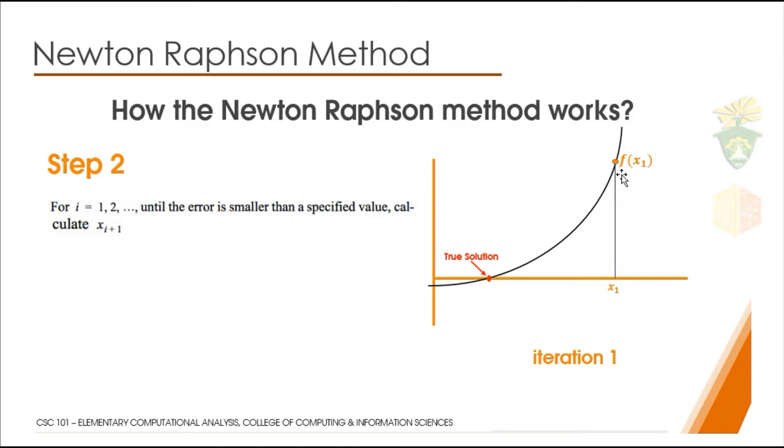The second step is to find f(x₁). In the function, you find where x₁ lands. In this example, f(x₁) is here. What's shown in step 2 is basically a summarization of what the next step is. I will explain this later.